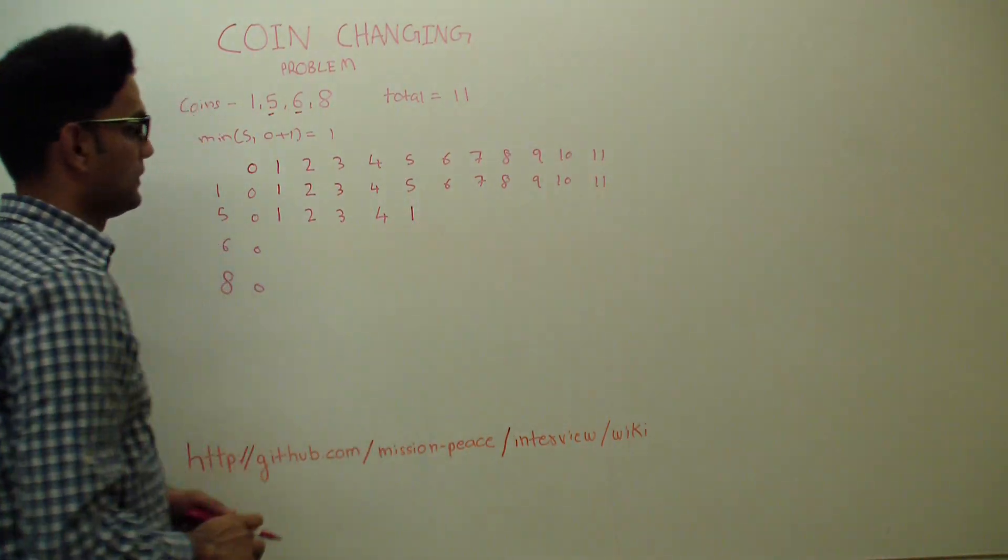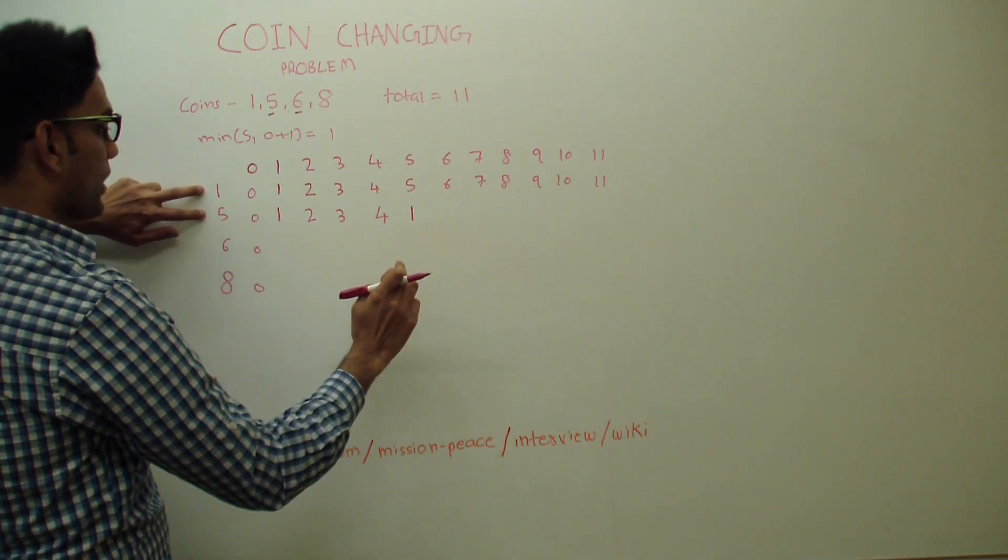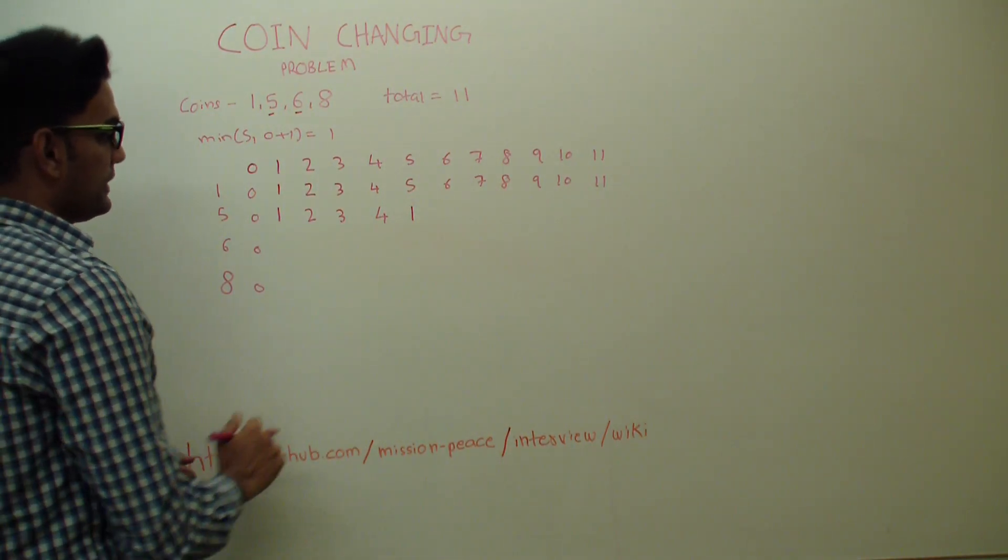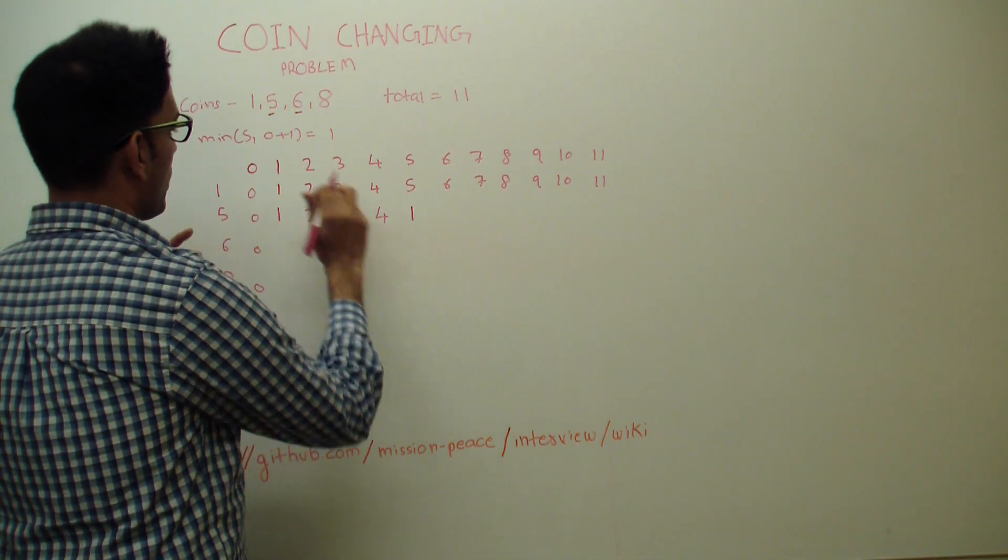Alright, let's look at 6. So if you have to get 6 and you have 2 coins, 1 and 5, the minimum number of coins you'll need is either 6 or 1 plus 1, so 2.